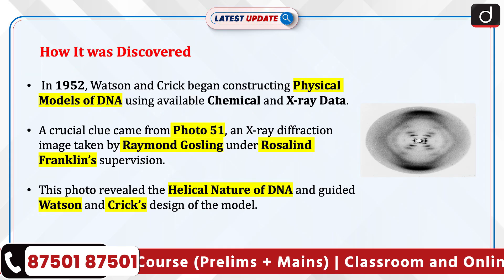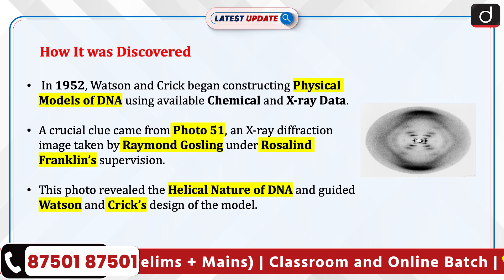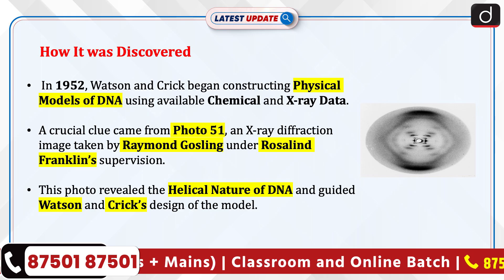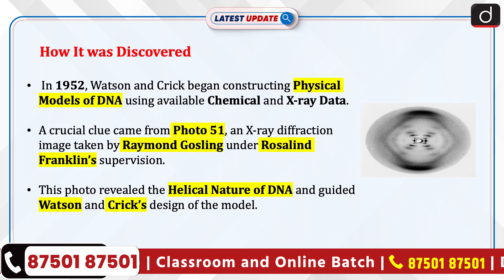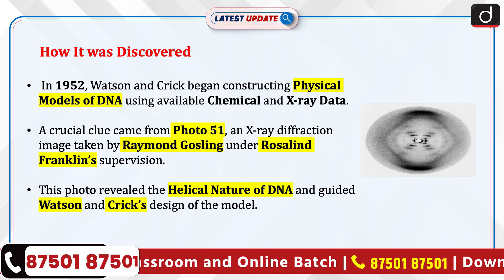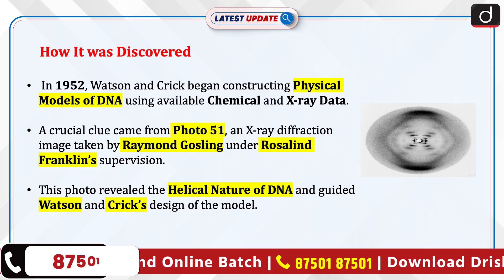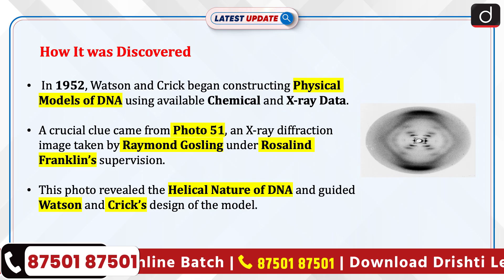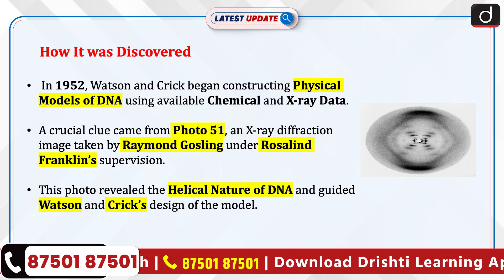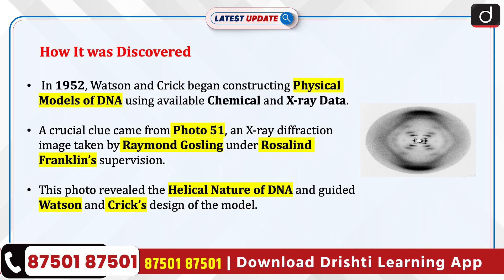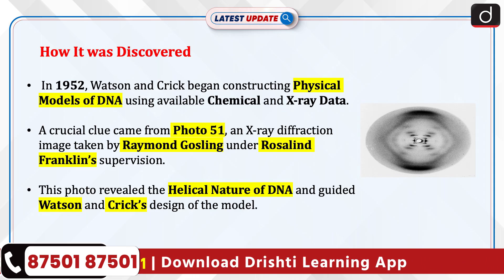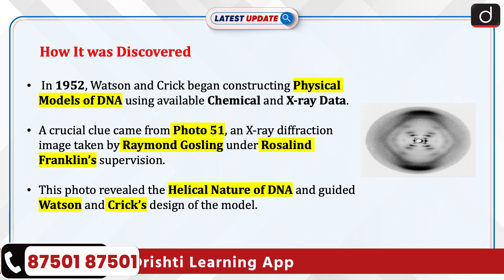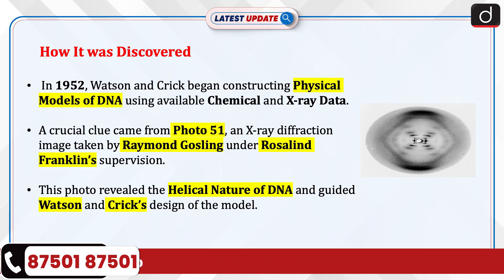Now let's discuss how it was discovered. In 1952, Watson and Crick began constructing physical models of DNA using available chemical and x-ray data. A crucial clue came from Photo 51, an x-ray diffraction image taken by Raymond Gosling under Rosalind Franklin's supervision.